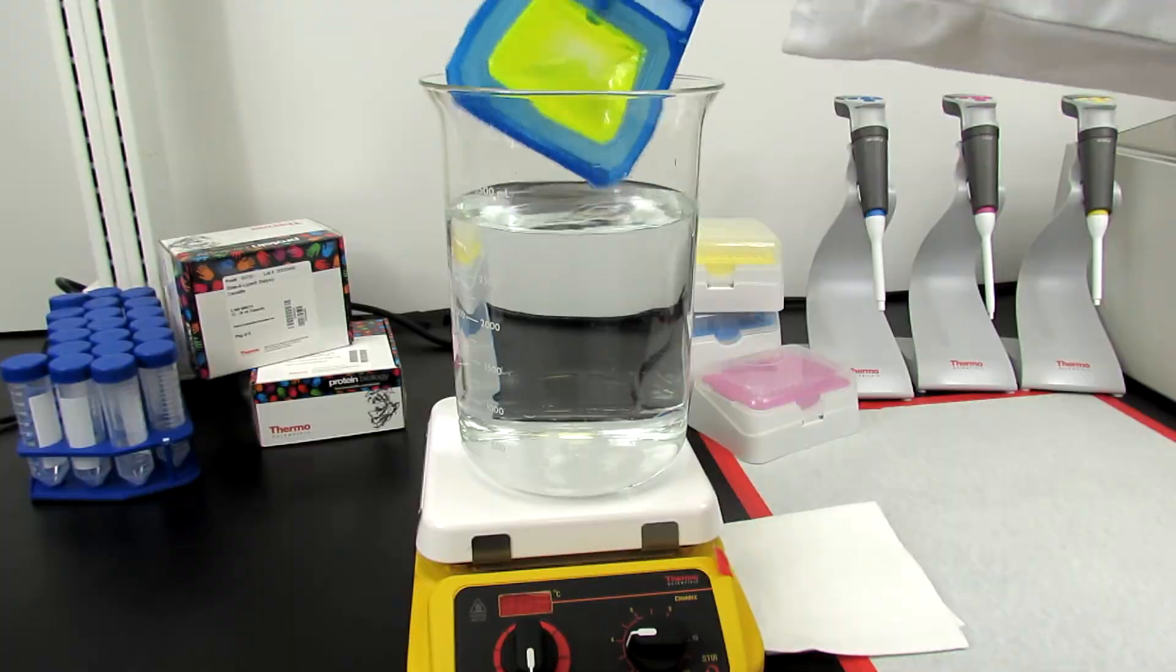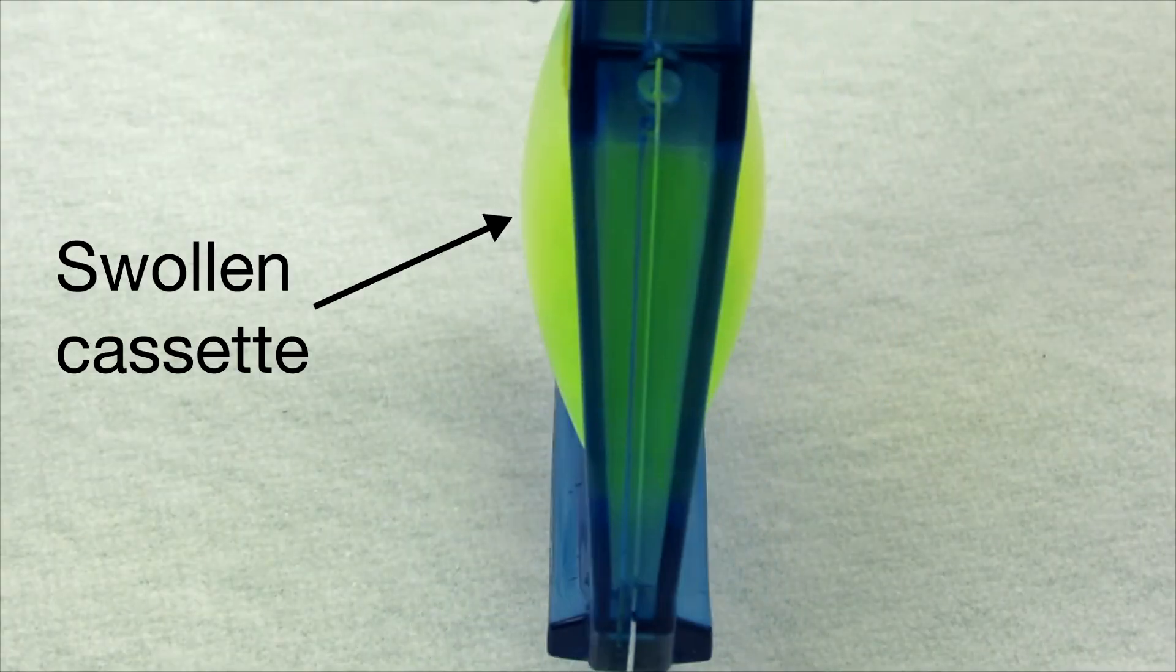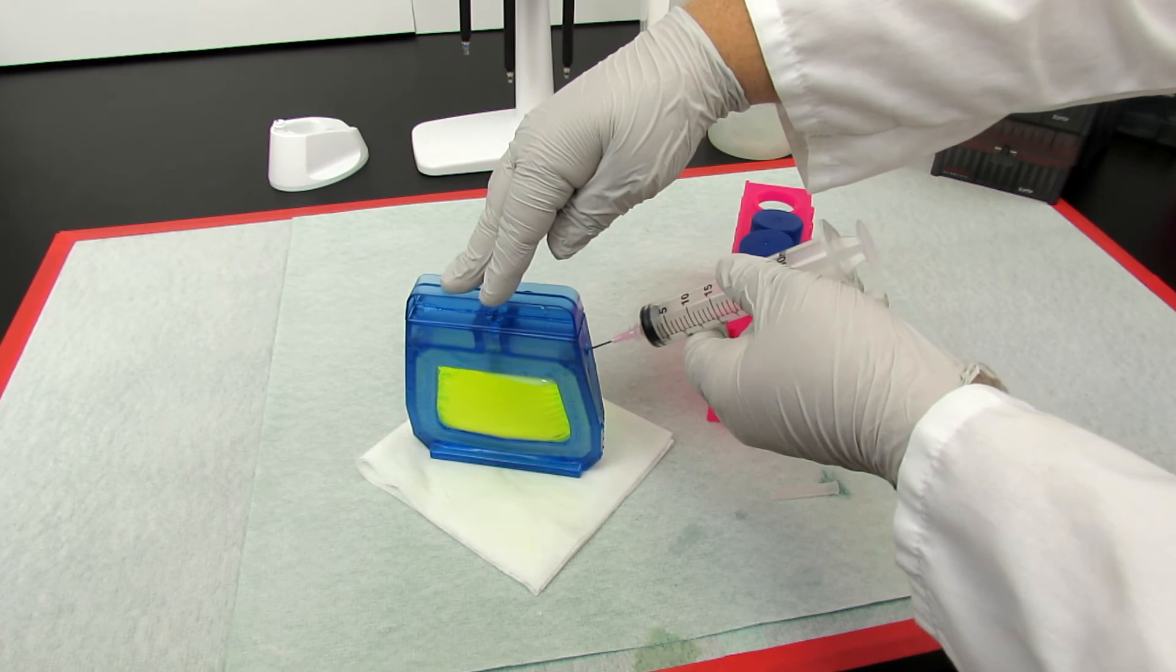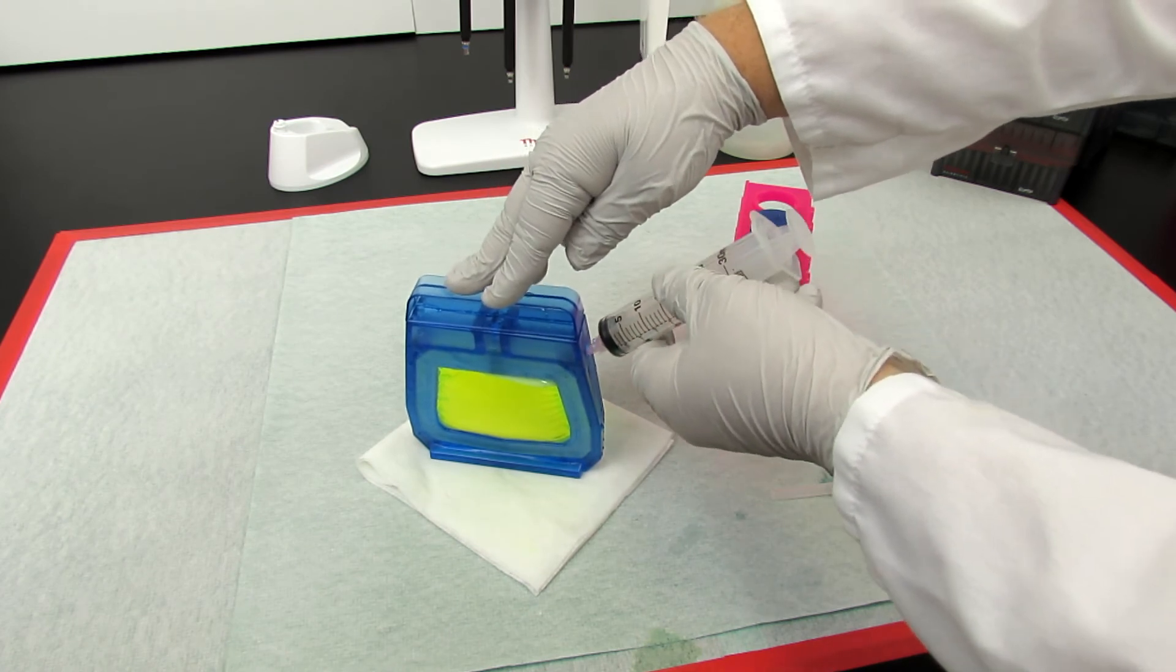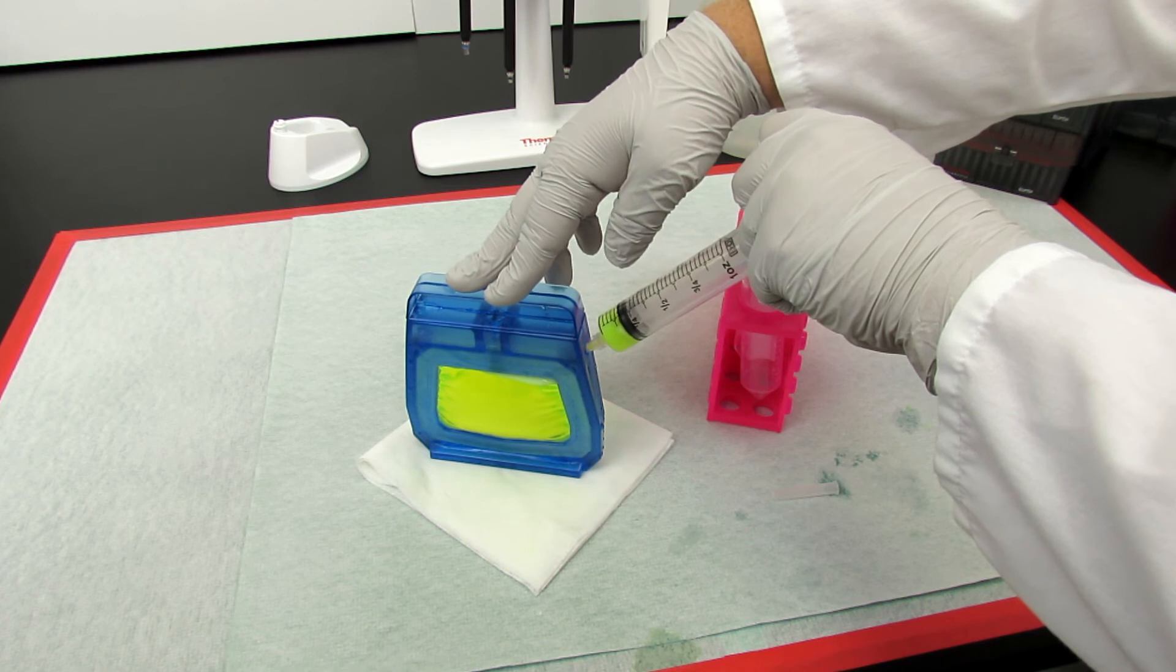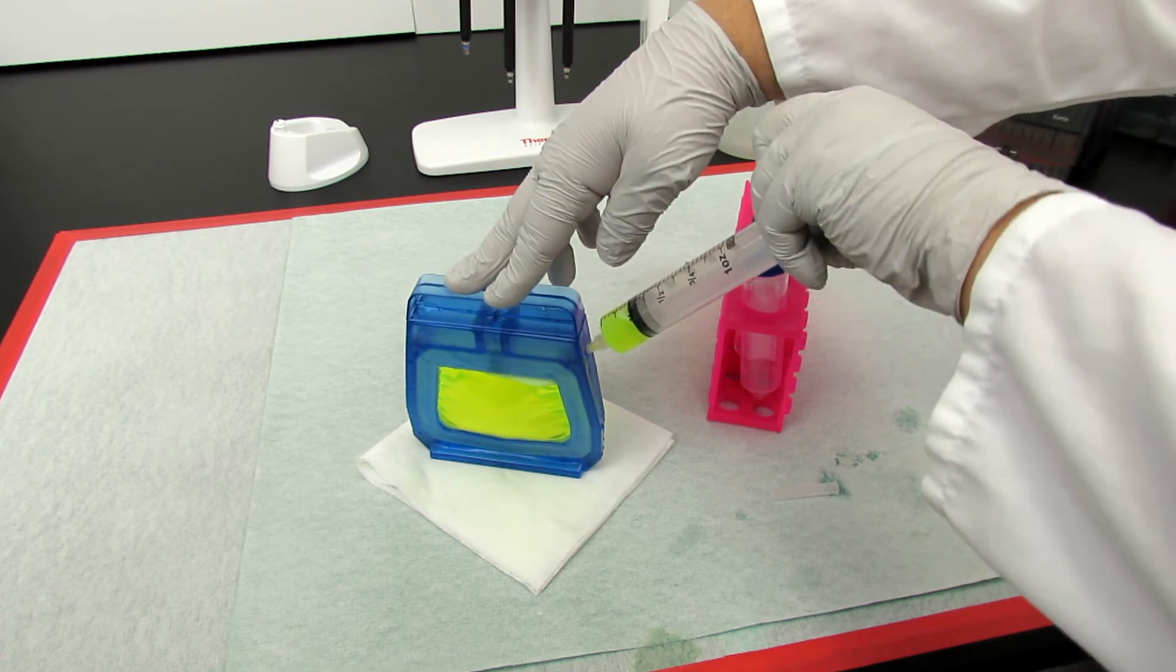Remove the cassette from the buffer and inspect it for swelling caused by a net influx of water. If the cassette has swollen, remove the pressure on the membranes by removing some of the sample using a syringe inserted through one of the ports at the corners of the cassette.